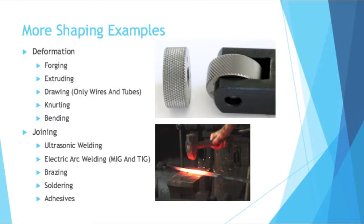If we're not deforming something, we're joining things together. There's ultrasonic welding, which is very interesting — a lot of plastic packages are ultrasonic welded together. It makes a high-pitched noise, and sound waves actually cause the plastic to fuse together. There's also electric arc welding; the two main types you always hear about are MIG and TIG — metal inert gas and tungsten inert gas welding.